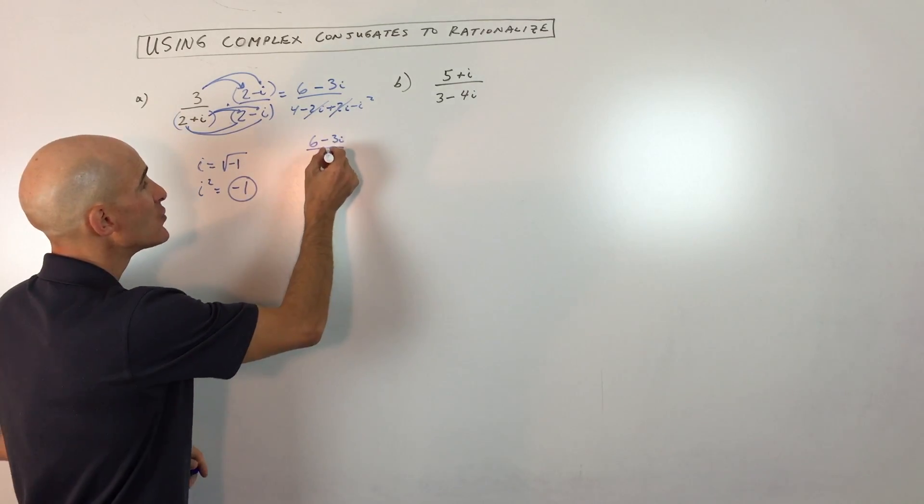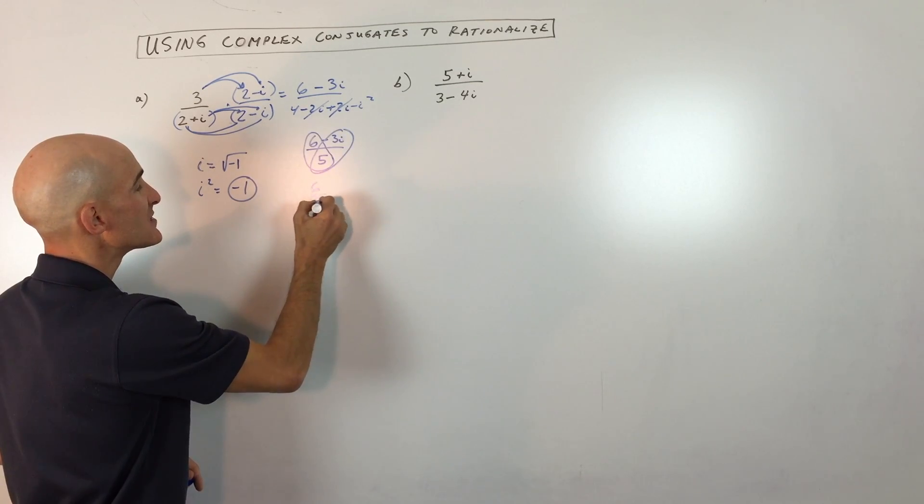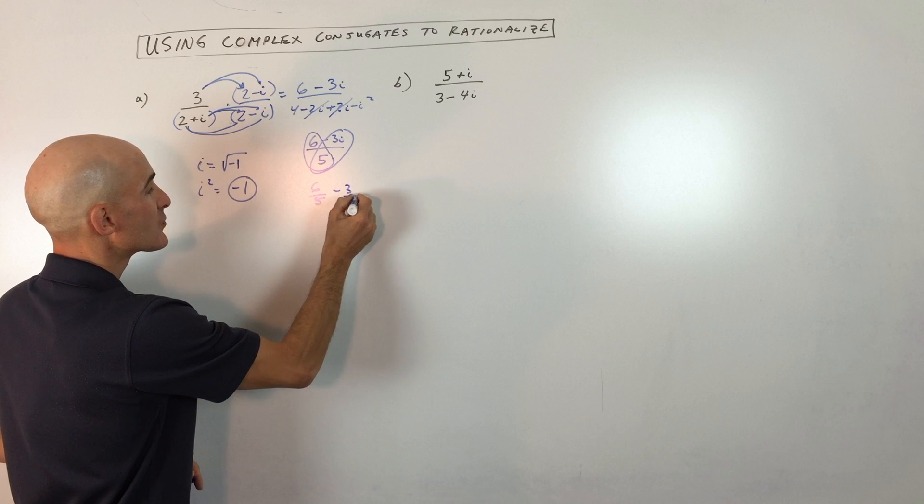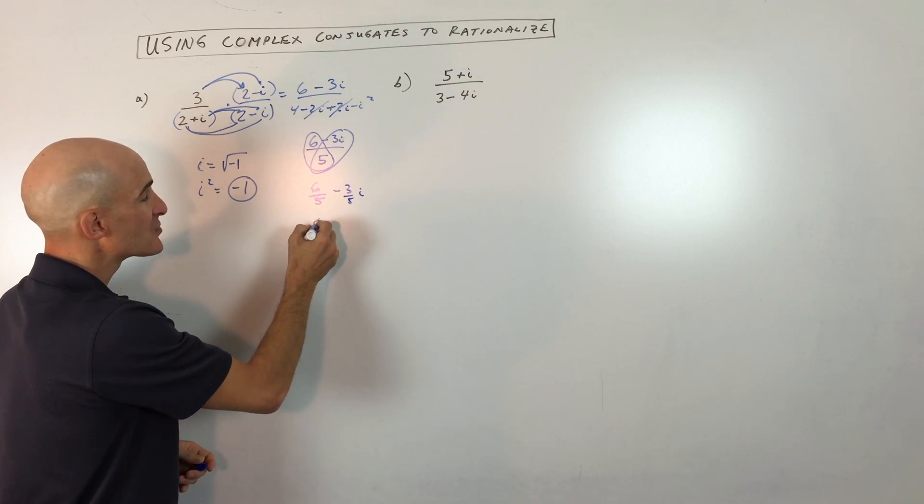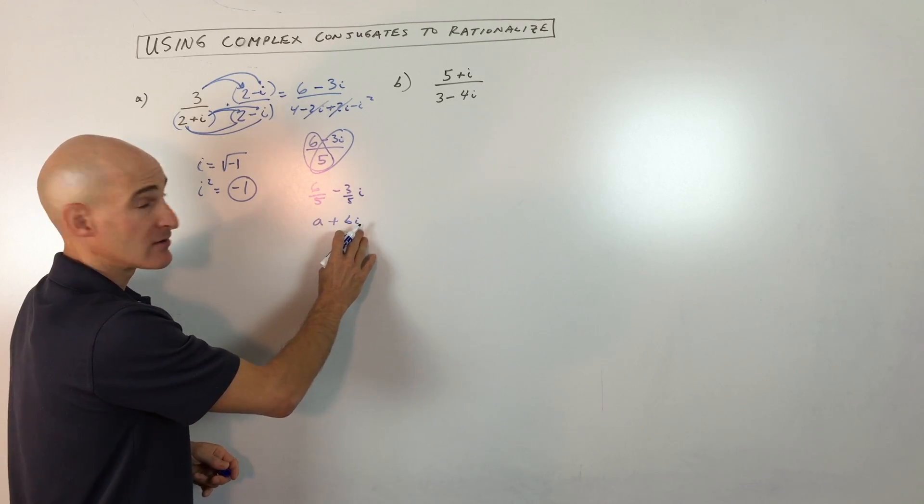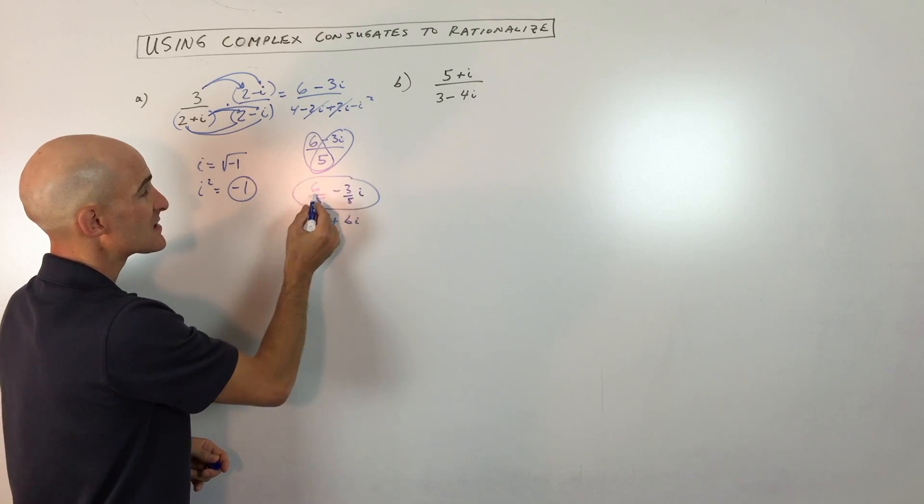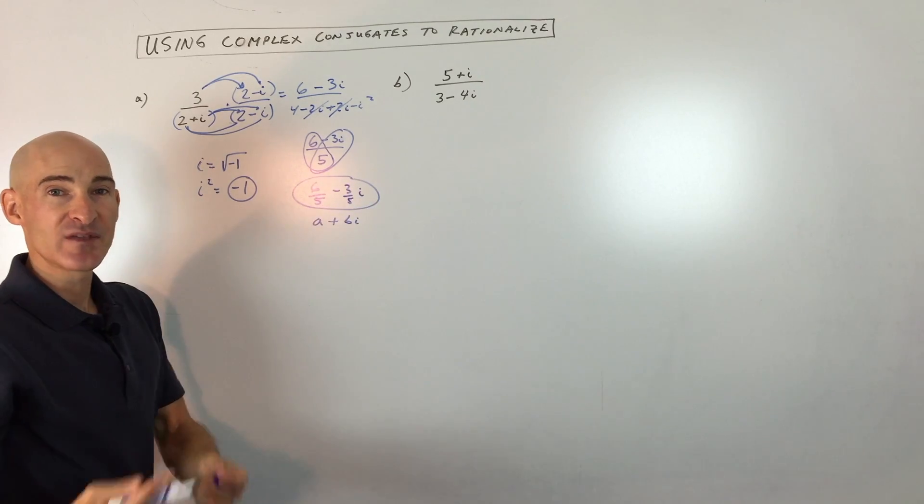But you don't want to leave it here. What you want to do is you want to split this up into two fractions. So this is going to be six fifths minus three fifths i. When we write our answers in complex numbers, we want to separate the real part, a, from the imaginary part, the bi part. So the best way to write this is six fifths minus three fifths i, and you're done.